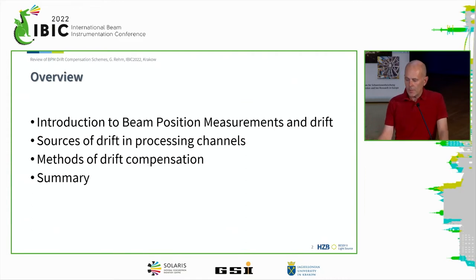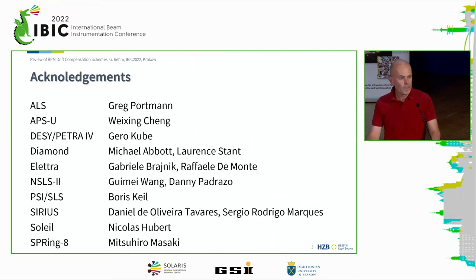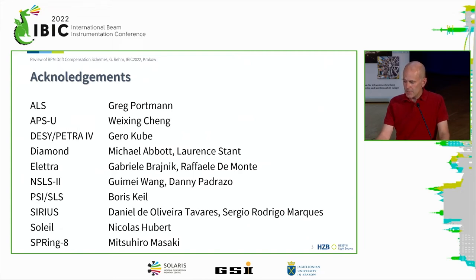A quick overview: I'll start with a brief introduction into beam position management, just to get everyone on the same page, and also to the source of drift in processing channels. Then I'm going to spend a lot of time on the various methods for drift compensation, and finally I'll summarize and try to give a bit of a comparison of the different methods on offer. Before I start, I want to acknowledge the lots of help which I got from many people around the globe. Maybe I should specifically thank Guimai Wang, who has provided me with her talk on stability, and also other groups who've provided me with previews of their papers, of which I've used some in this presentation.